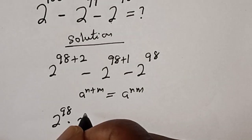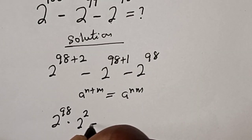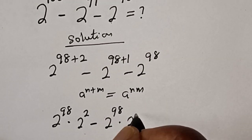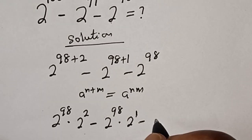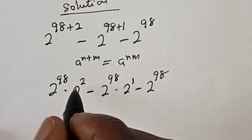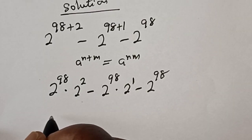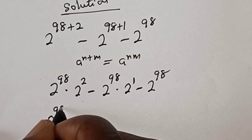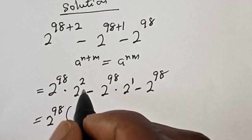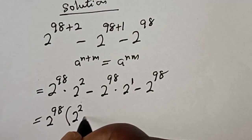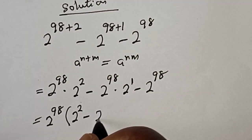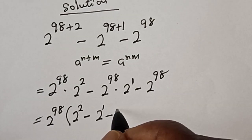Then this becomes 2 raised to power 98 multiplied by 2 raised to power 2, minus 2 raised to power 98 multiplied by 2 raised to power 1, minus 2 raised to power 98. From here, 2 raised to power 98 is common — let's bring it out. We have 2 raised to power 98 times bracket 2 raised to power 2, minus 2 raised to power 1, minus 1.